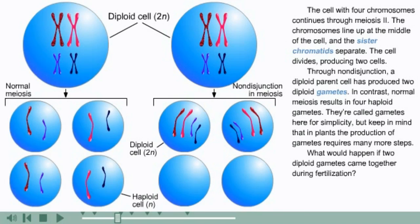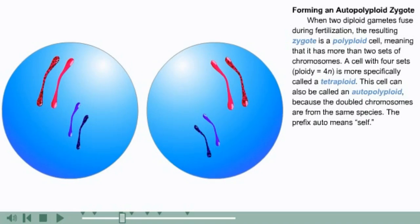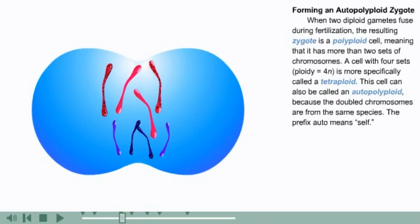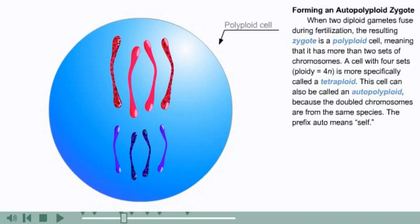In contrast, normal meiosis results in four haploid gametes. They're called gametes here for simplicity, but keep in mind that in plants, the production of gametes requires many more steps. What would happen if two diploid gametes came together during fertilization? When two diploid gametes fuse during fertilization, the resulting zygote is a polyploid cell, meaning that it has more than two sets of chromosomes.